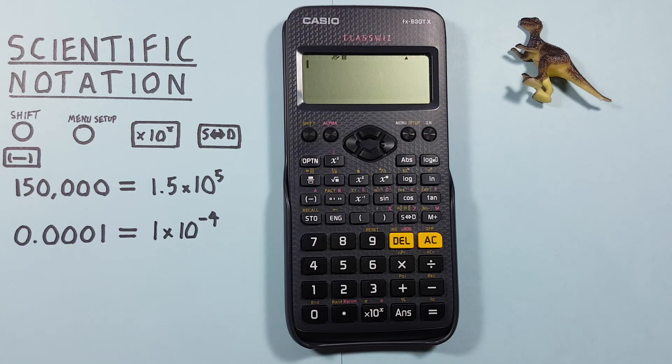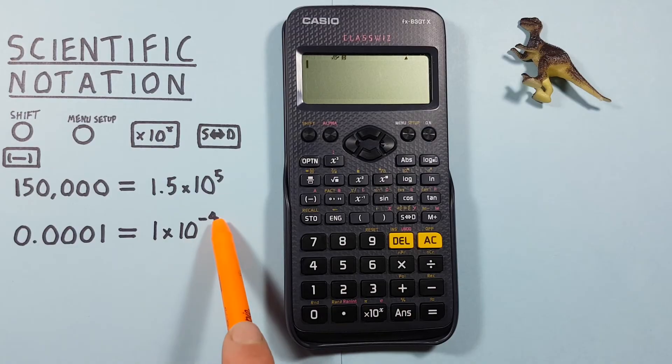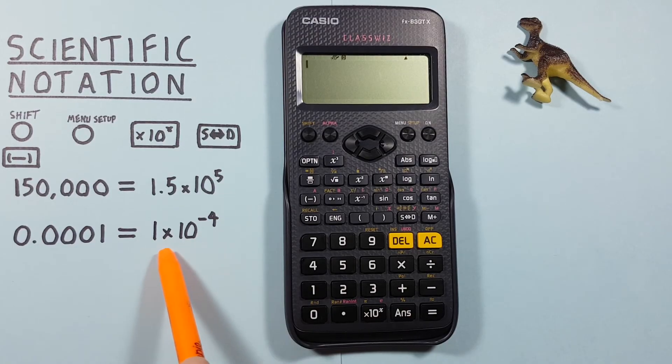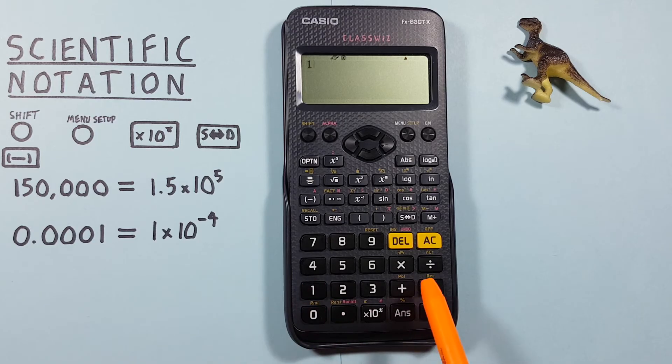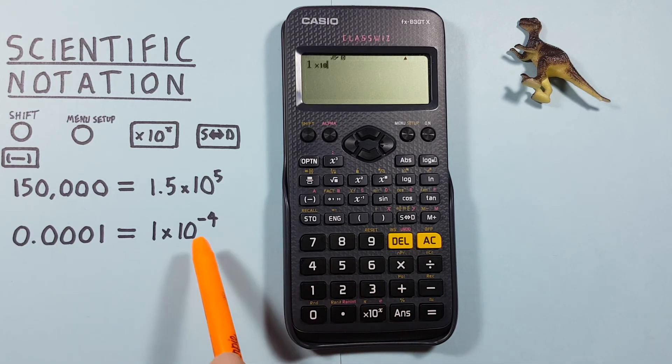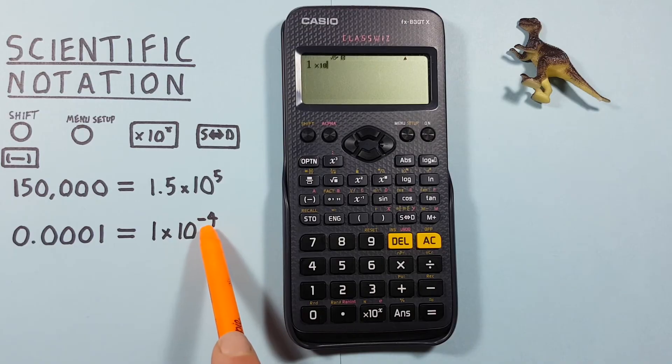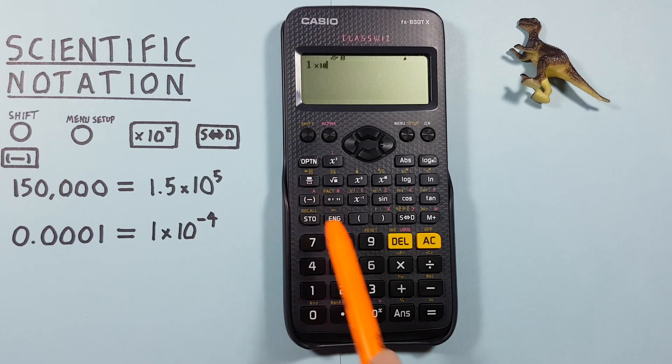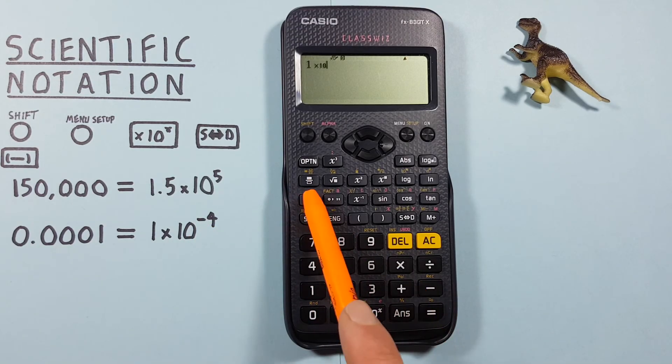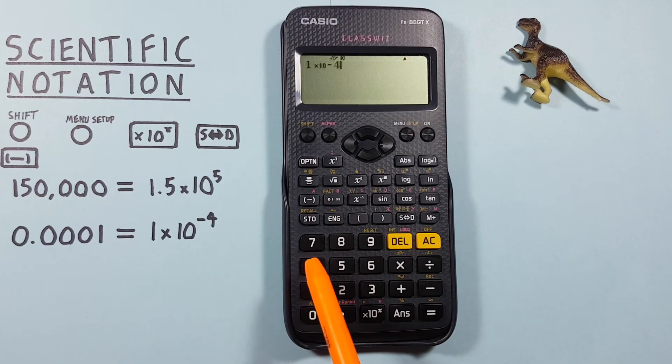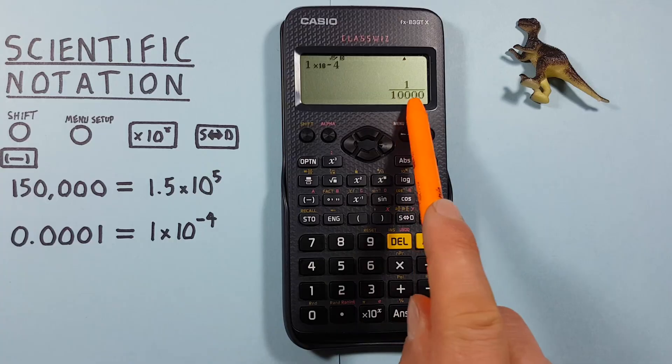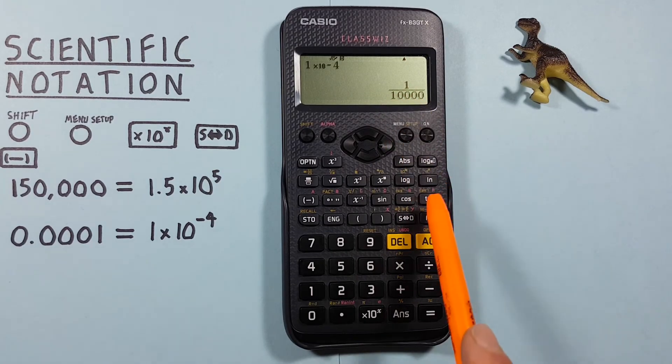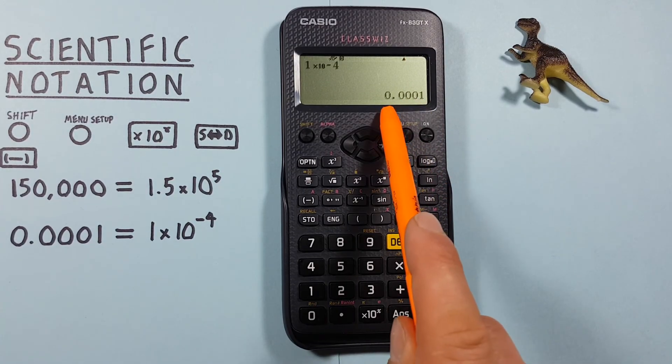It works the same for very small numbers. Let's say we were given 1 times 10 to the power of negative 4 and wanted to enter that on our calculator. We enter 1, times 10 to the x, then negative 4. It's important to use the negative key, not the subtraction key. Press equals, and again it gives us the answer in a fraction. If we convert that, we see it's the decimal.